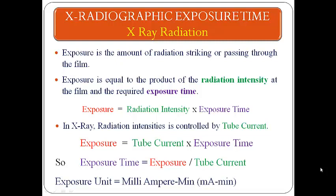In X-ray, radiation intensity is controlled by tube current, so the equation becomes: expiry = tube current × expiry time. Therefore, expiry time = expiry ÷ tube current. The unit of expiry is milliampere-minutes (mA·min).